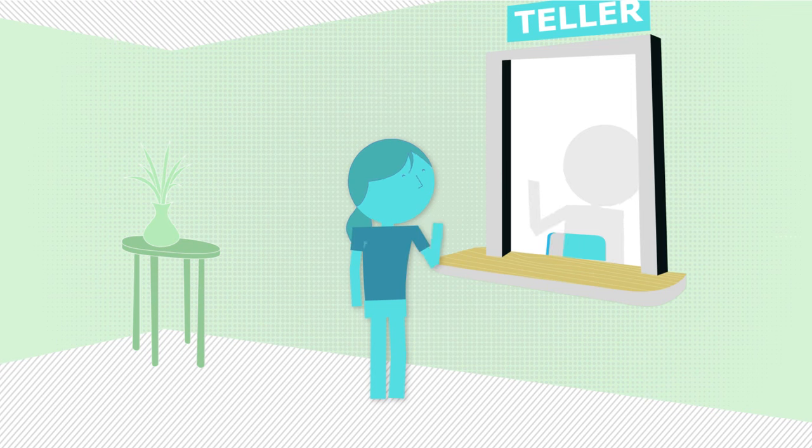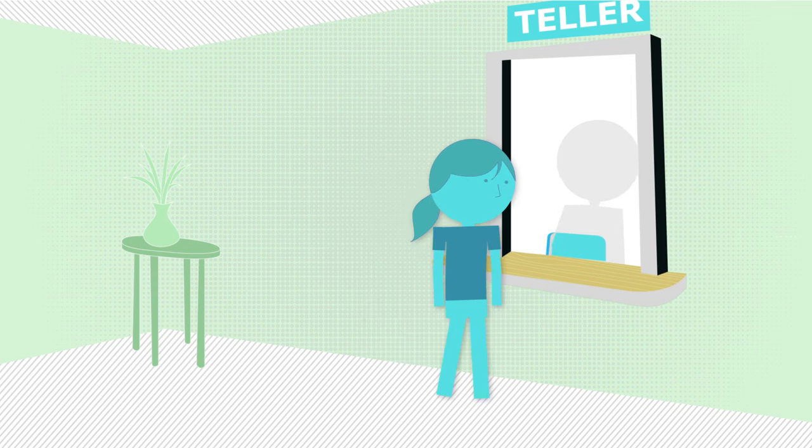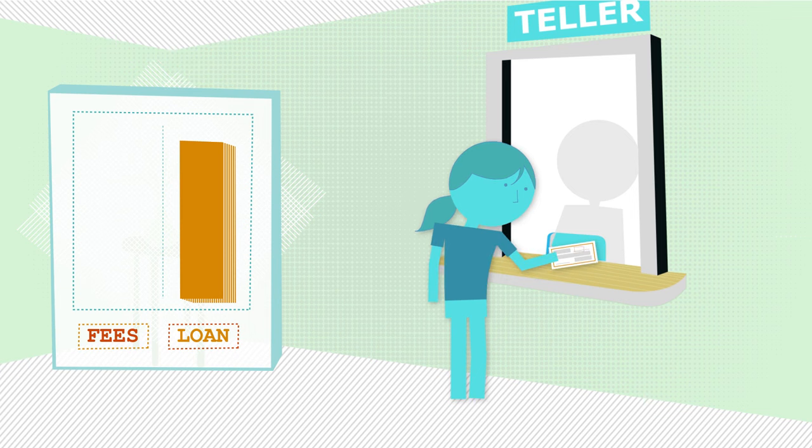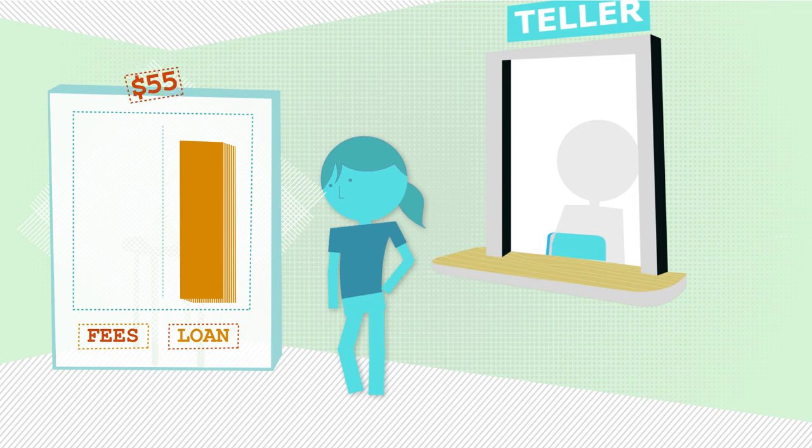Jennifer is short $375 on her rent, which is also the average payday loan amount. To get the loan, she just has to agree to pay a one-time fee of $55.